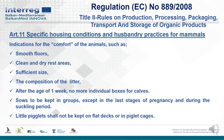Article 11: Specific Housing Conditions and Husbandry Practices for Mammals. Indications for the comfort of animals include smooth floors, clean and dry rest areas, sufficient size, and appropriate litter composition. After the age of one week, no more individual boxes for calves. Sows shall be kept in groups except in the last stages of pregnancy and during the suckling period. Piglets shall not be kept on flat decks or in piglet cages.